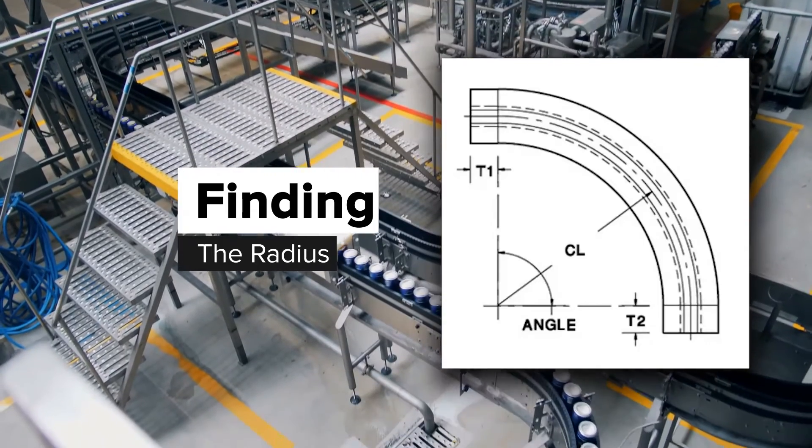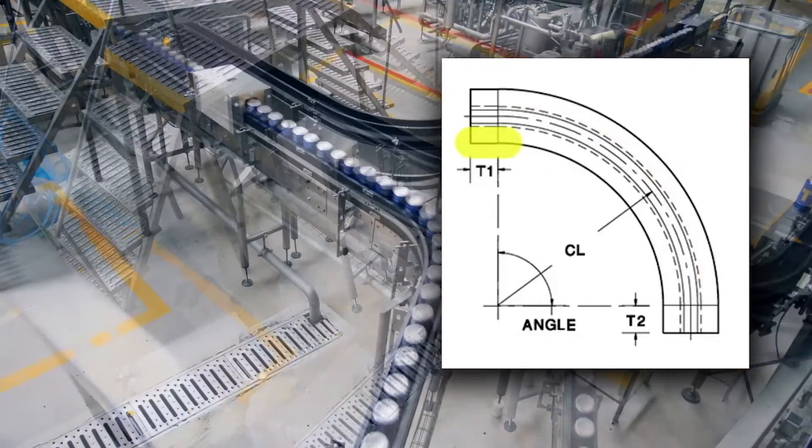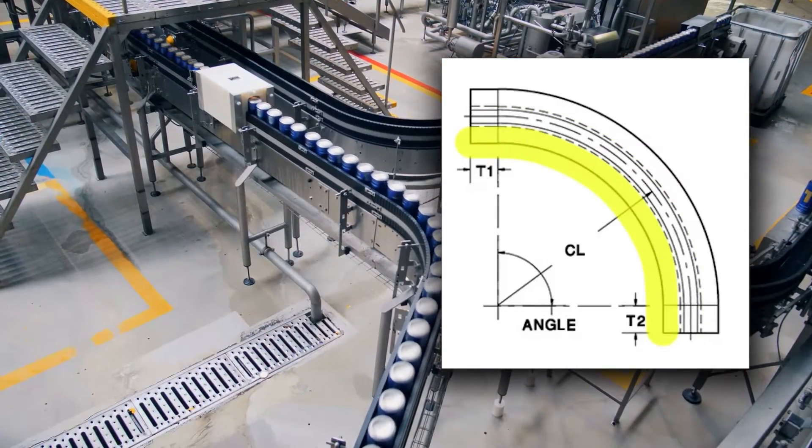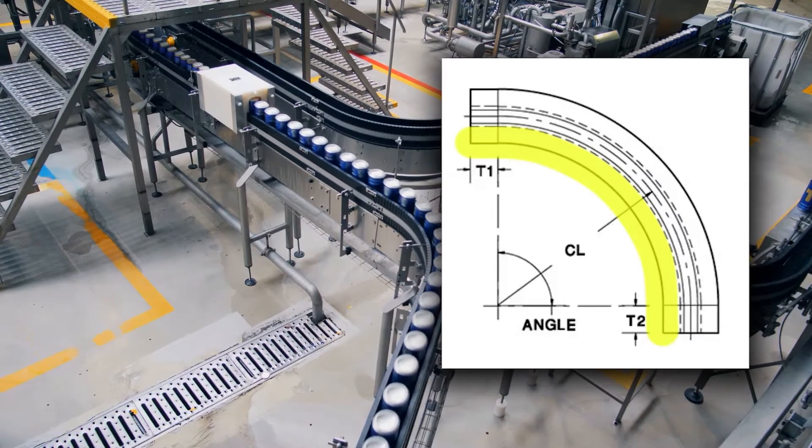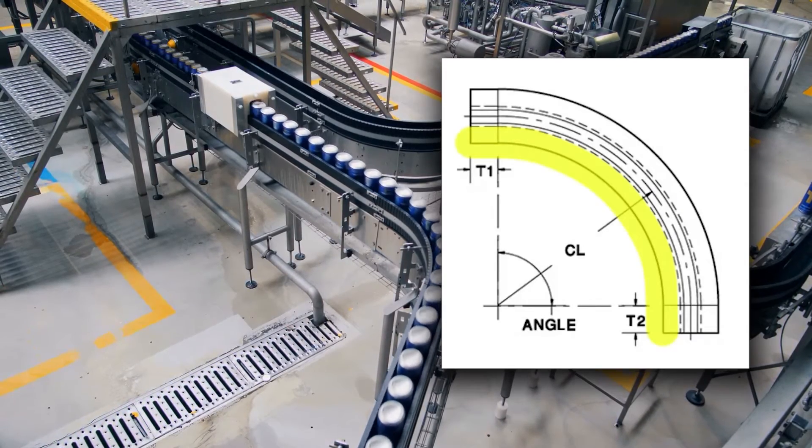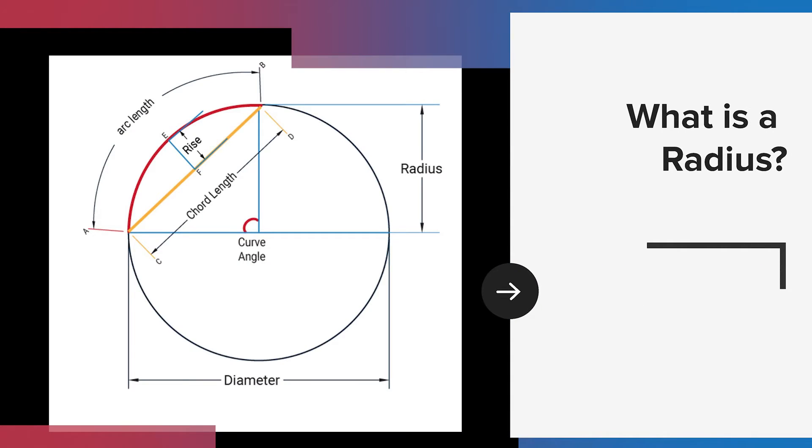Next we'll find the radius. For all examples in this video we will be measuring the outside of the curve. You can also measure the inside of the curve. Measuring both the inside and outside dimensions can be helpful in verifying your data.